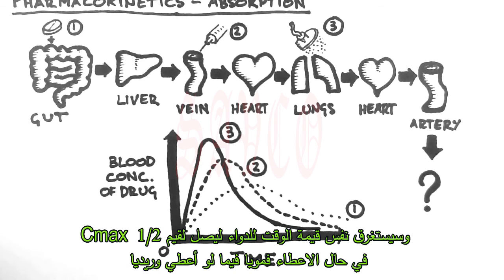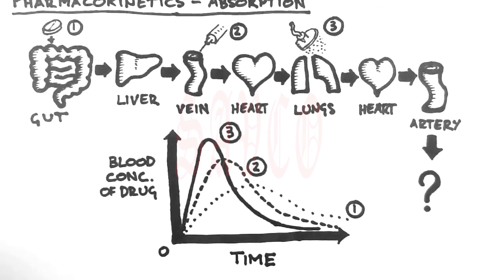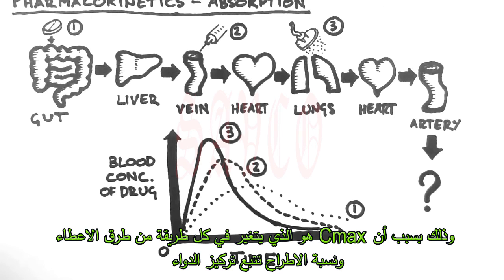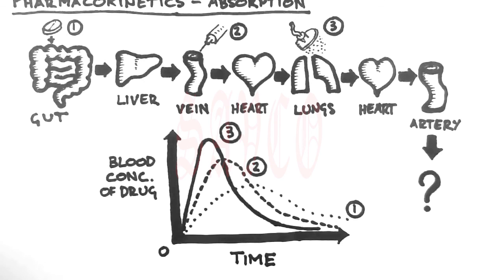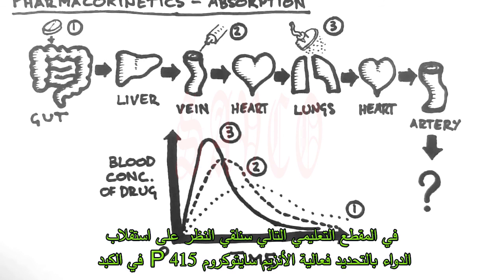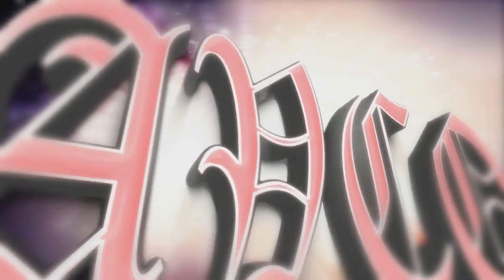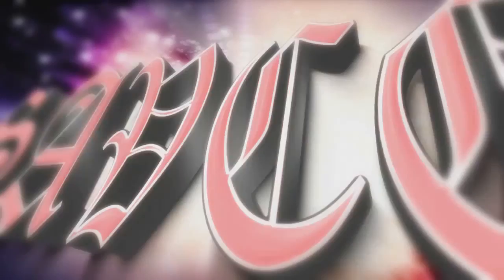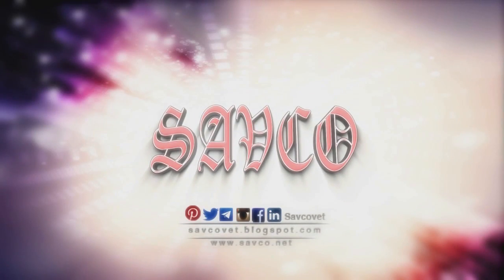It will take the same amount of time for the drug to reach half of the C-max orally as it will to reach half of the C-max intravenously. This is because the C-max is different for each route of administration, and the rate of excretion is proportional to the current concentration of the drug. In the next tutorial, we'll look at the metabolism of drugs — in particular, the actions of cytochrome P450 in the liver.